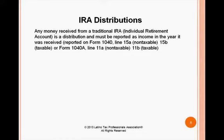Any money received from a traditional IRA — individual retirement account — is a distribution and must be reported as income in the year received. It is reported on Form 1040, Line 15A if non-taxable or 15B if taxable; or on Form 1040A, Line 11A for non-taxable and 11B for taxable.